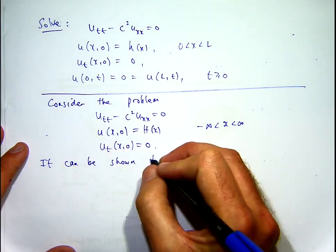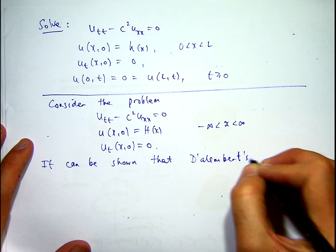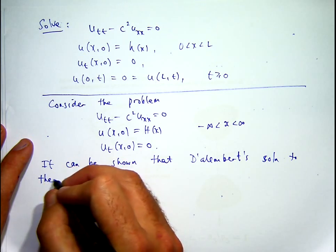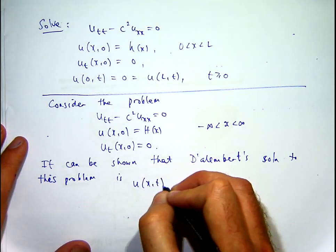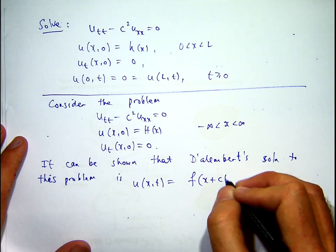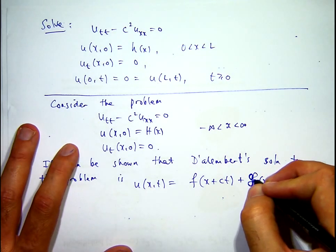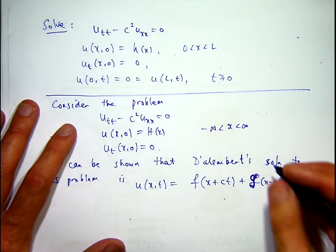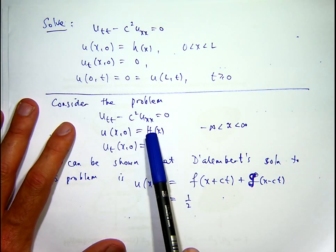It can be shown that D'Alembert's solution to this second problem is the following. In fact, we verified that in another video, another presentation, where f and g are just twice differentiable functions. Now, in fact, you can go a bit further and actually say that you can relate these two functions with the initial displacement.